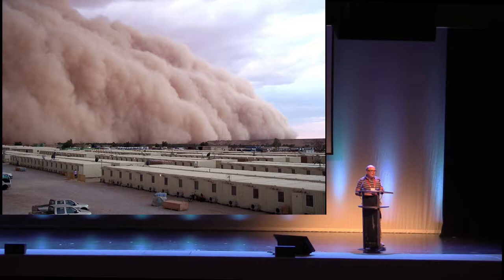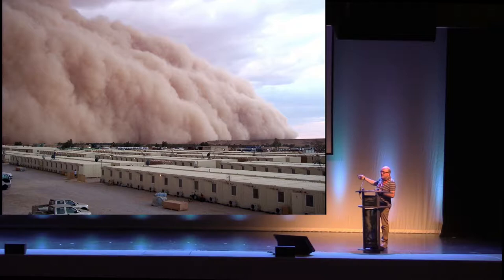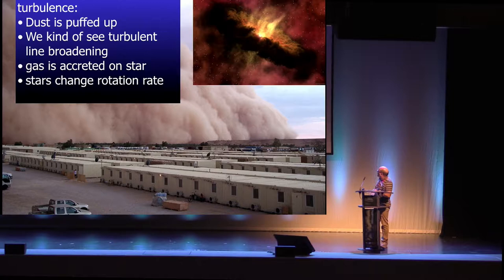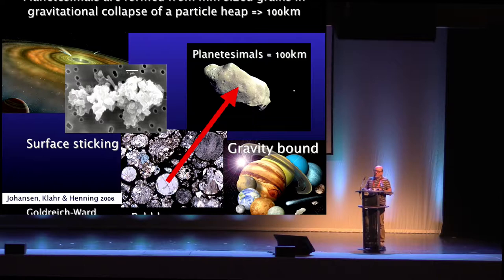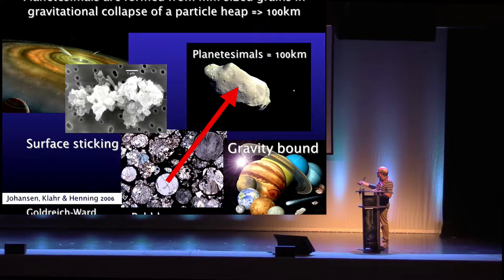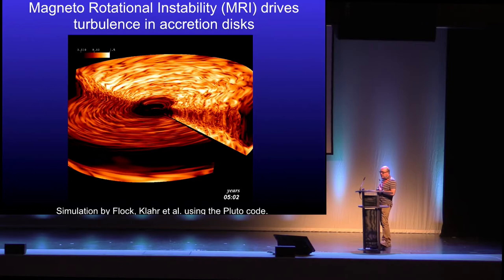If you imagine what the protoplanetary disk looks like up close, think of a desert storm where little dust grains are flying through the air and being transported — much like the artist's impression. This is one of many reasons we believe in turbulence. One idea for forming planets is that small dust grains stick together to form larger entities, but in real collisions — as you see in a desert storm — particles are grinding down to smaller sizes. So instead, as Clement mentioned, you locally concentrate huge piles of pebbles and trigger a gravitational collapse into a planetesimal.